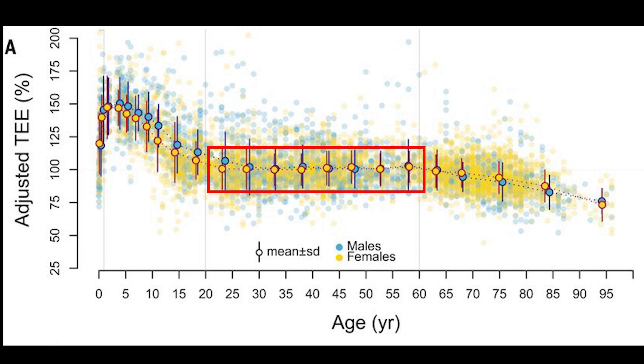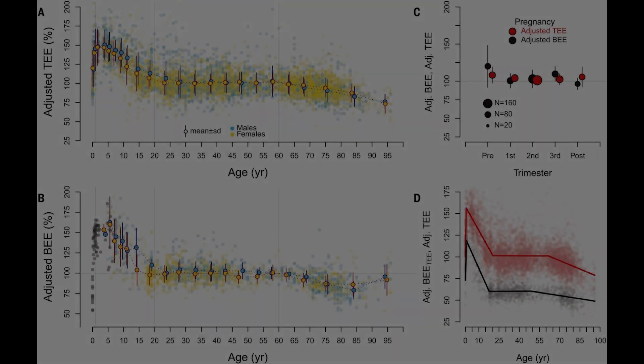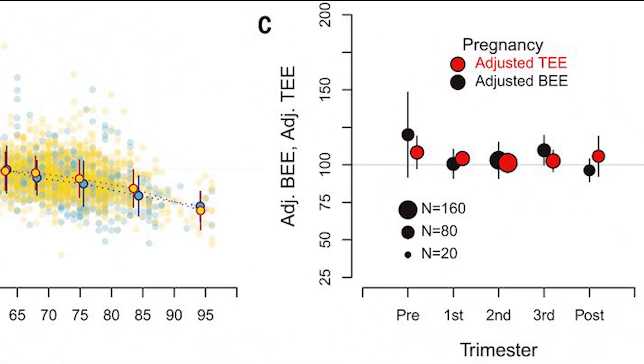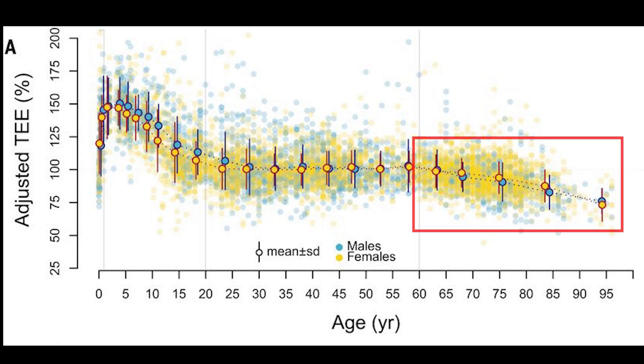And so this is the surprising finding that during majority of adulthood, there isn't a consistent decline in metabolic rates. And even more interestingly, they also looked at what happens before, during and after pregnancy. And again, once they've made their different adjustments by fat mass, they saw that there wasn't any significant differences between the different stages. And so it's only over the ages of 60 that there's this final decline in the energy expenditure.